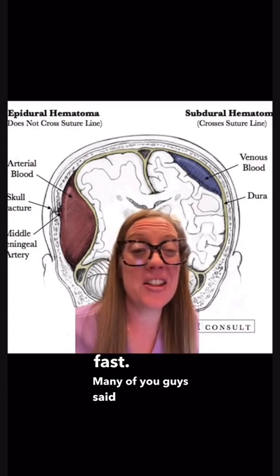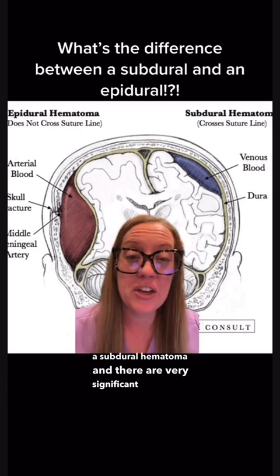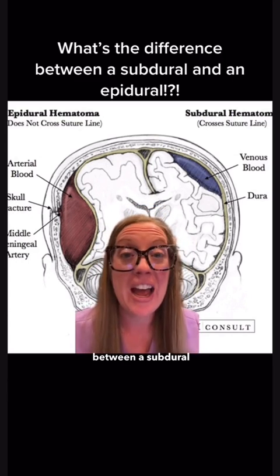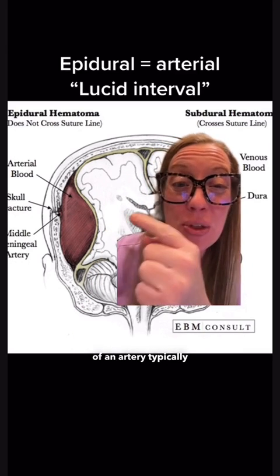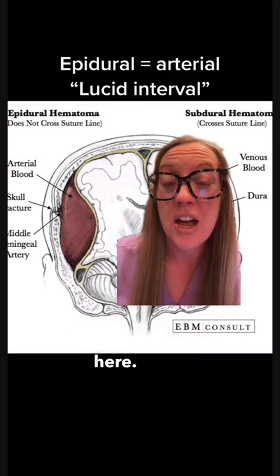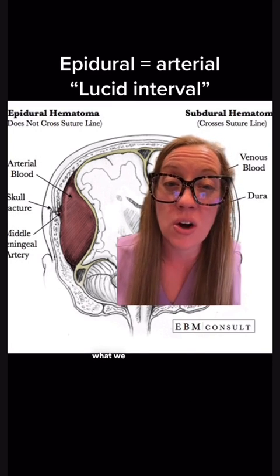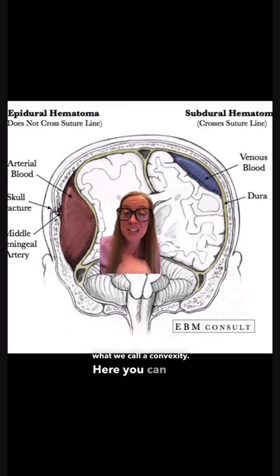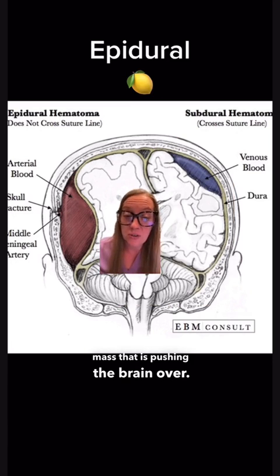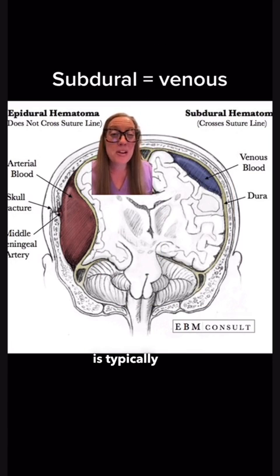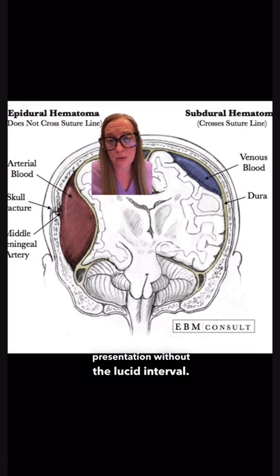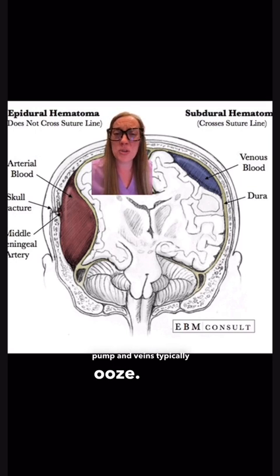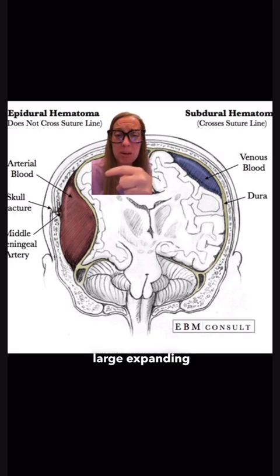Many of you said that this was a subdural hematoma, and there are very significant differences between a subdural and an epidural hematoma. Epidurals are caused from laceration of an artery, typically through a skull fracture as shown here. That means arteries bleed fast and cause what we call a convexity. Here you can see this lemon-shaped mass that is pushing the brain over. A subdural hematoma is typically from a venous bleed and is usually a slower presentation without the lucid interval. Remember that arteries pump and veins typically ooze.